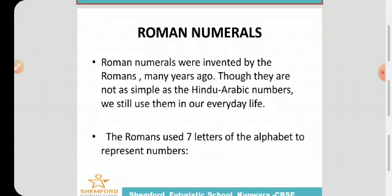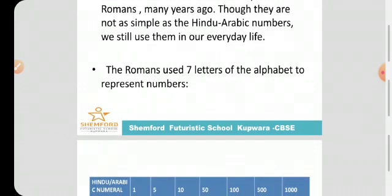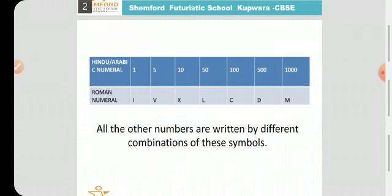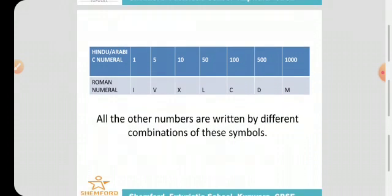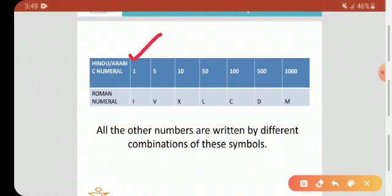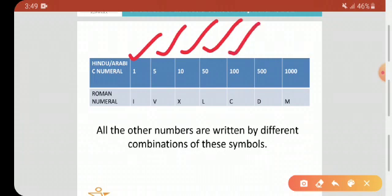The Romans used seven letters of the alphabet to represent numbers. In Roman numerals, there are seven symbols for counting. Let us study these Roman symbols and numerals. The letters represent a value: I represents 1, V represents 5, X represents 10, L represents 50, C represents 100, D represents 500, and M represents 1000.